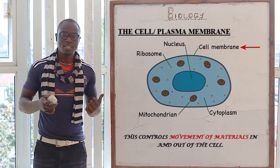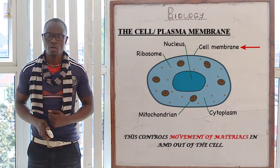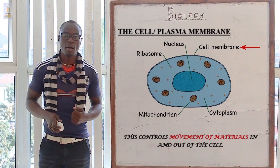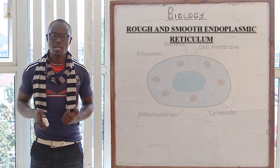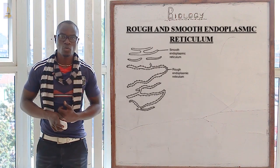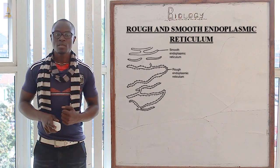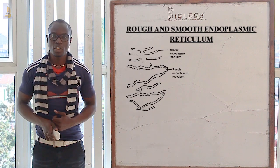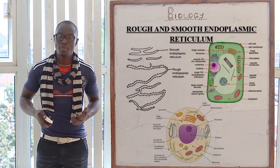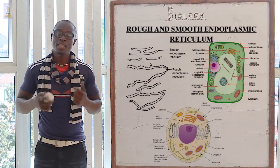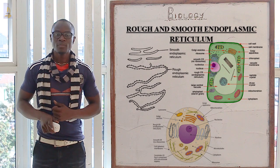We are going to look at these physiological processes and define them and see how they come about. The next structure we are going to look at is the endoplasmic reticulum. What you should note before we begin is that the endoplasmic reticulum originates from the nucleus.